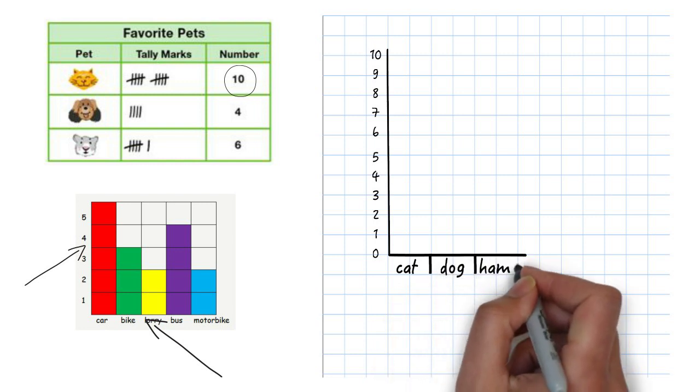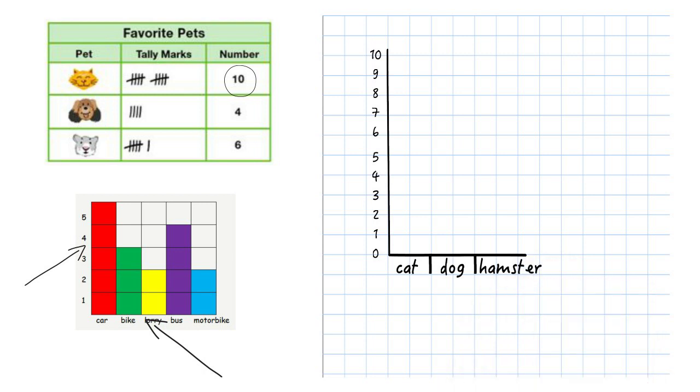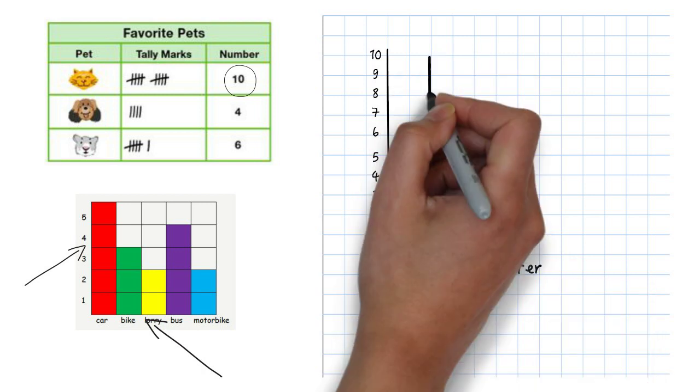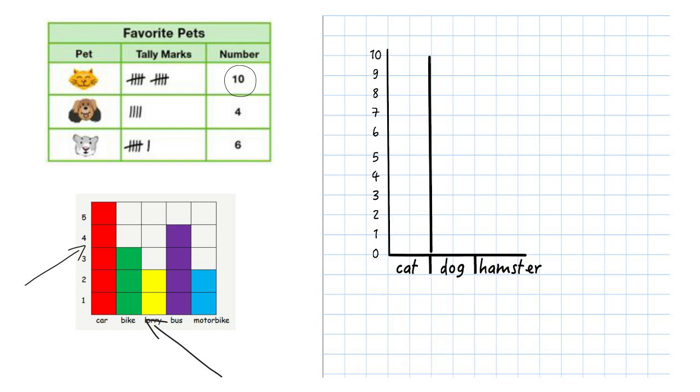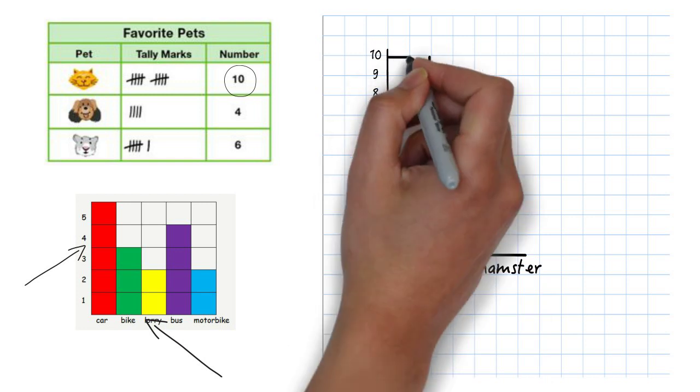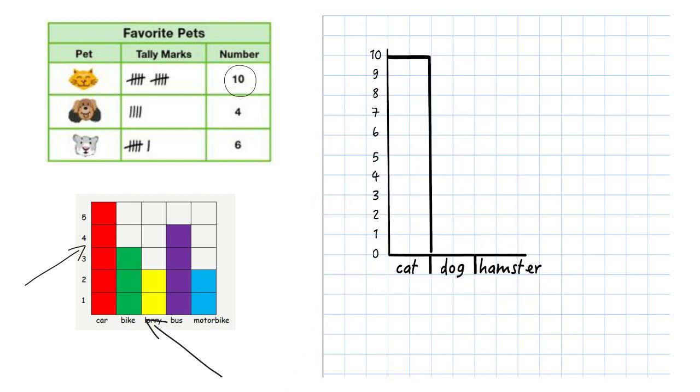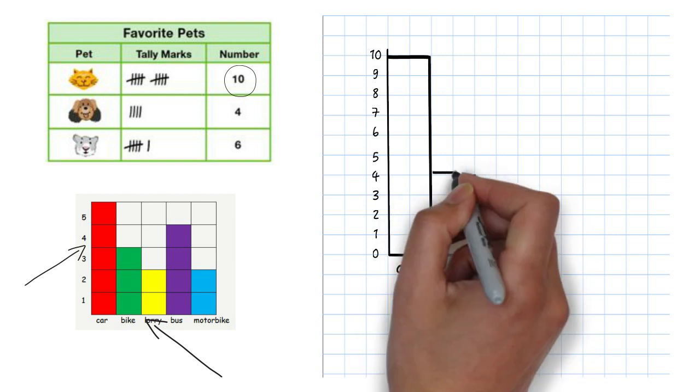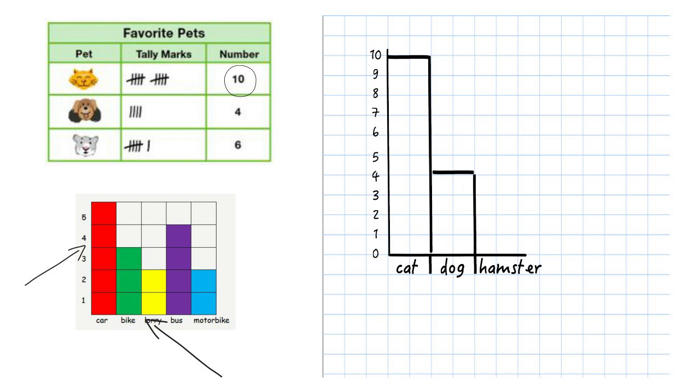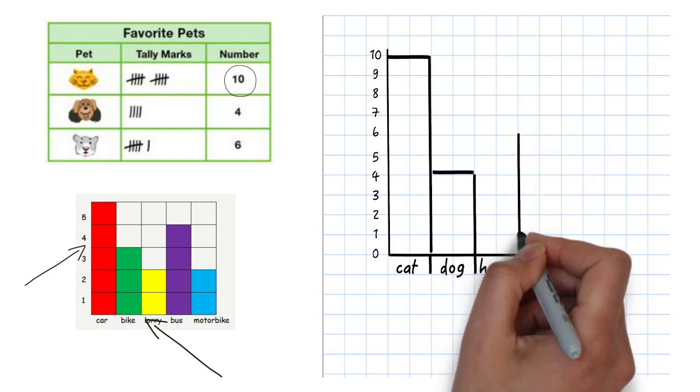When you've labelled all of the categories you need to start looking at how many blocks you need to fill in. Cats has ten so I need to draw a line that goes to ten. Dogs has four so I draw a line that goes to four, and hamsters has six so I draw a line that goes to six.